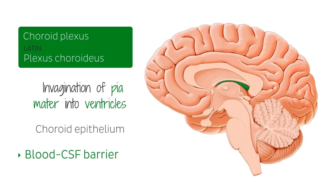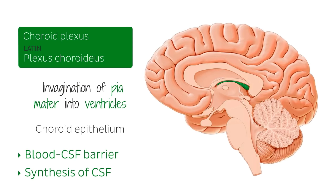The primary function of the choroid plexus is synthesis of cerebrospinal fluid. This image shows the choroid plexus of the third ventricle, highlighted here in green, and the choroid plexus of the fourth ventricle is in this area down below.